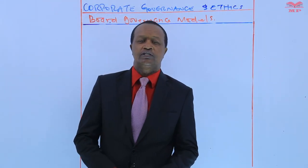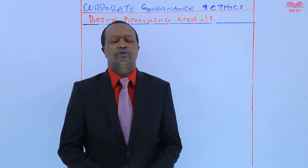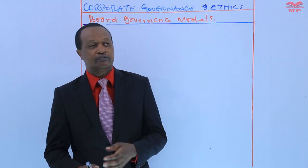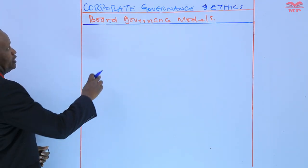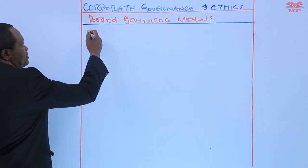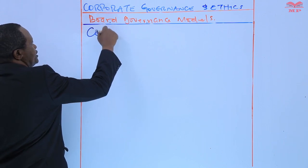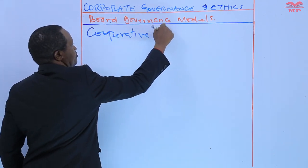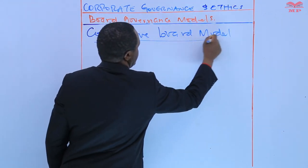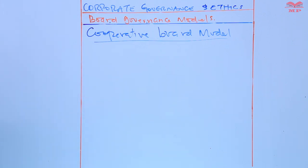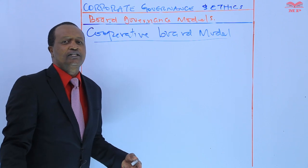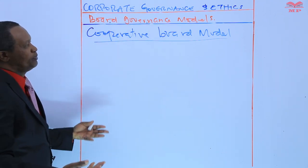Hello and welcome back to the lesson. Today we are going to study the characteristics, the benefits and limitations of the cooperative model, which is one of the board governance models we will be studying in this chapter. The subtopic is the cooperative board model. By the end of this lesson, we should be able to explain the features of a cooperative board model, the benefits and the limitations. So first of all, what is a cooperative board model?